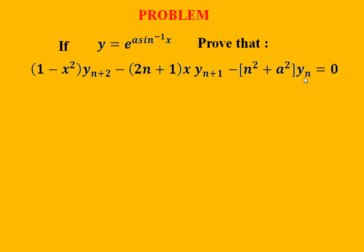Here y_n stands for the nth derivative of y with respect to x. To prove this relation, first we will obtain a relation between y2, y1, and y by differentiating y with respect to x.